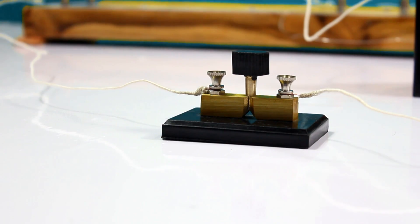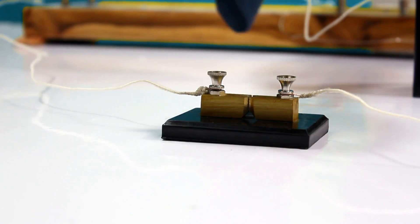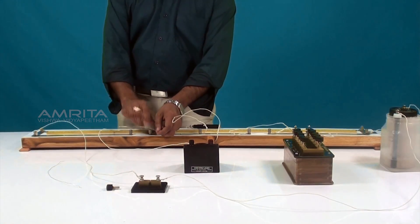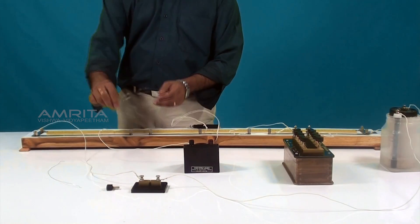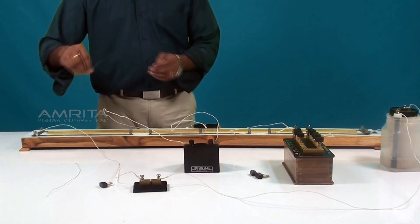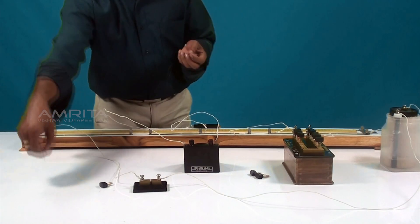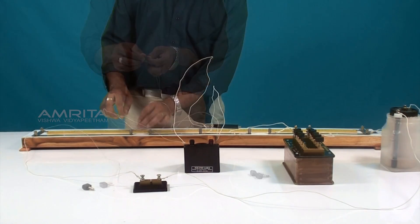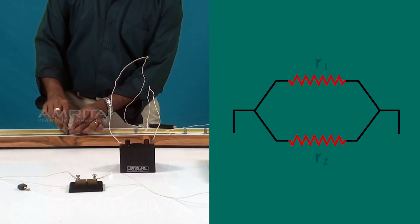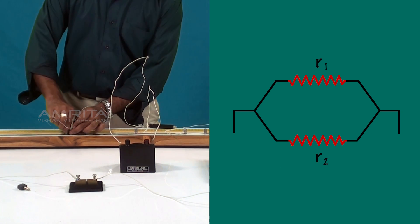After taking the values, remove the key and then the resistance wire R2 from the gap G2. Now take two resistance wires R1 and R2 connected in parallel in the gap G2 of the meter bridge.